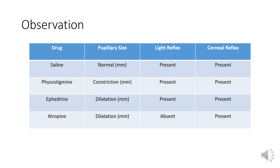Now we'll see the observations. We have taken 3 different drugs: Physostigmine, Ephedrine, and Atropine. Saline is used as control. In case of saline, the pupil size is normal and both light reflex and corneal reflex are present.